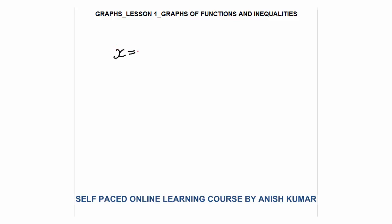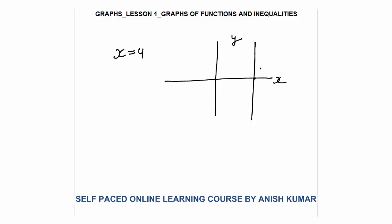My first graph would be x is equal to 4. Let's mark the x-axis and y-axis. When x is 4, it means that whatever will be the value of y, x will always be equal to 4. This line will cut the x-axis at (4, 0). When x is 4, y will be 0, but x could be 4 with y equal to 1 as well. This is a straight line with infinite length — the graph of x is equal to 4.